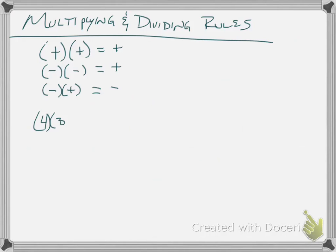4 times 3 is equal to 12. Positive 4, positive 3 stays positive. Negative 4 times negative 3, negative times a negative becomes positive, so that's positive 12. Negative 4 times positive 3, one's positive, one's negative, that's when it's negative 12.